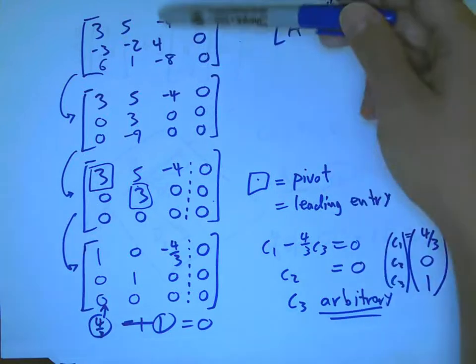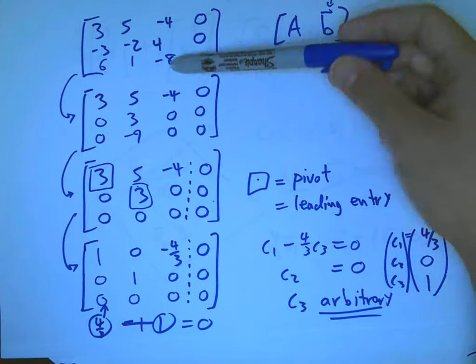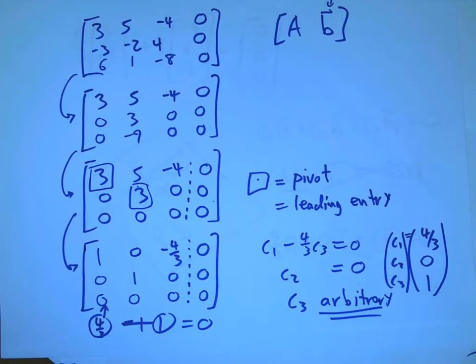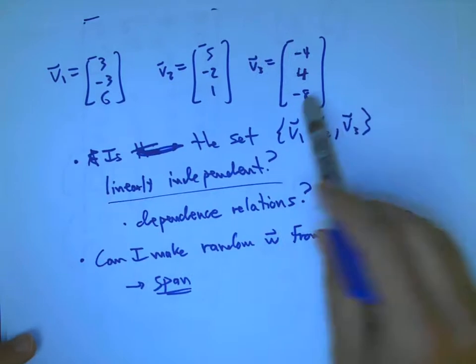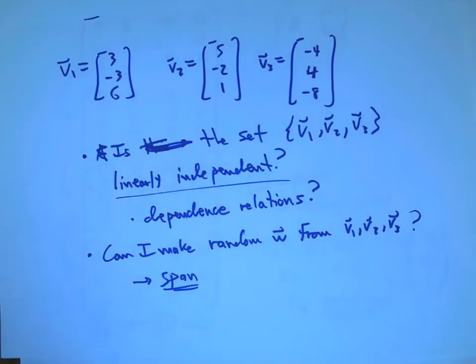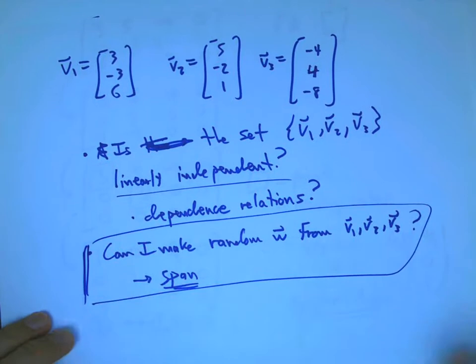We're back to say more about this matrix and what it says about these three vectors. I want to look at this question. Can I make a random w out of those three vectors?